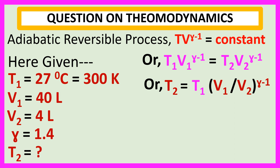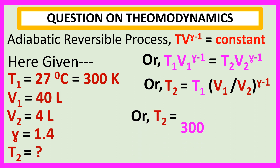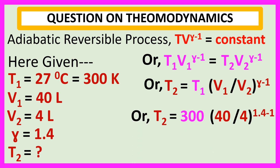Now, we put the values of T1, V1, V2, and gamma in this equation: T2 is equal to 300 into 40 by 4 to the power 1.4 minus 1, or T2 is equal to 753.56 Kelvin. Thank you for watching this video.